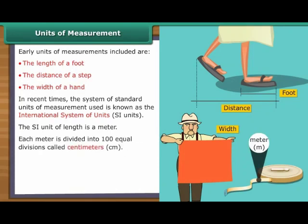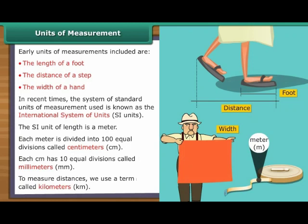The SI unit of length is a metre. Each metre is divided into 100 equal divisions. These are called centimetres or CM. Each centimetre has 10 equal divisions. These divisions are called millimetres or MM. To measure distances, we use a term called kilometres or KM.